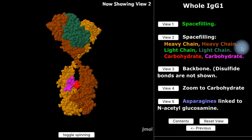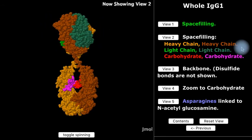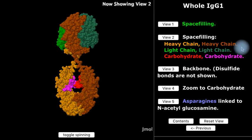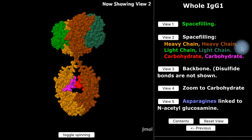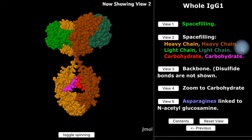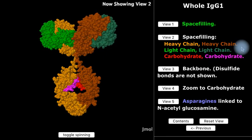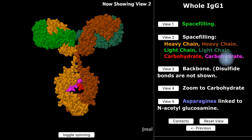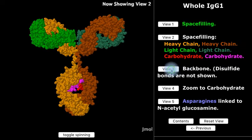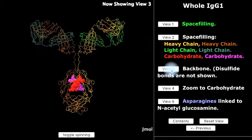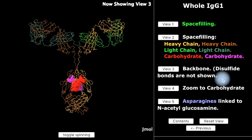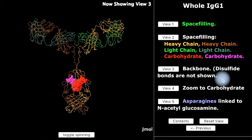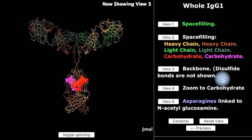Notice how the glycosylation, the carbohydrate, props the two FC chains apart. Without this propping apart, the FC arm loses much of its ability to bind to FC receptors on macrophages to activate complement, and also when the carbohydrate is missing, the antibody is removed much more quickly from the circulation.